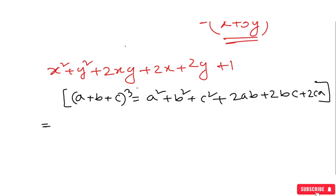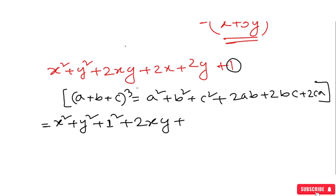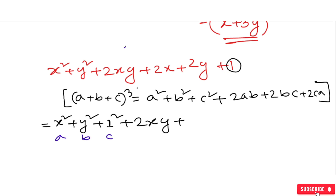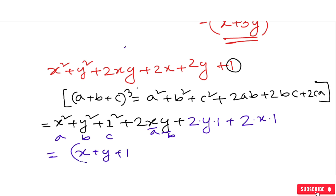So (a + b + c)² gives us a² + b² + c² + 2ab + 2bc + 2ca. Here a = x, b = y, and c = 1. So x plus y plus 1 whole squared. 2ab means 2xy, 2bc means 2y, and 2ca means 2x. So x² + y² + 1 + 2xy + 2y + 2x.